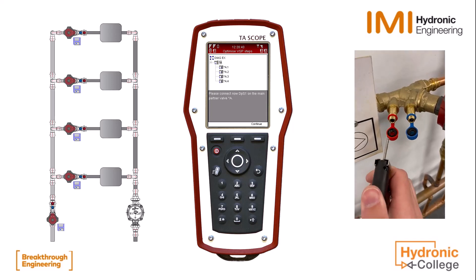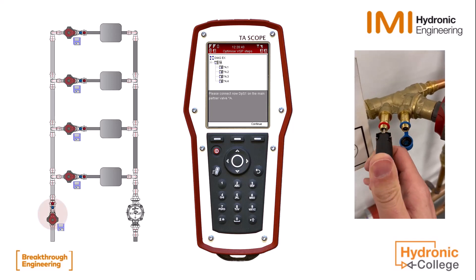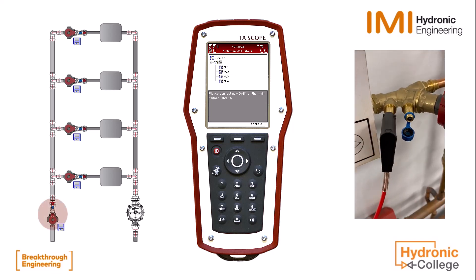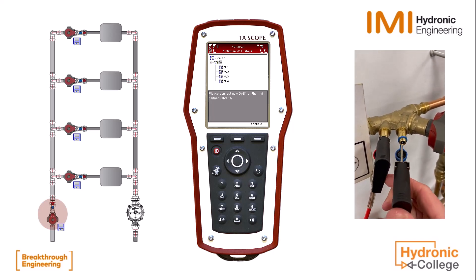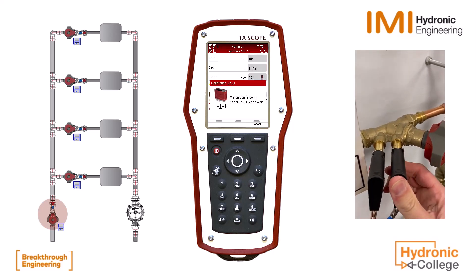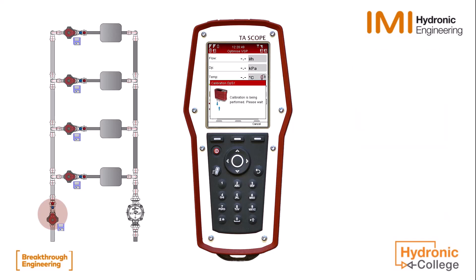Connect DPS1 to the partner valve and press Continue. TA Scope will now take a reading of flow and differential pressure at the partner valve. Once flow has been stabilized, press Continue.